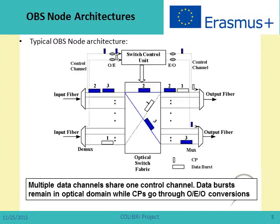The architecture for optical burst switching consists in sending the header offline — that is, we send the header before sending the real burst. This way we give enough time to the switch control to set the switches in the desired position. Of course this has some disadvantages related to how to process the different bursts that have to be sent.